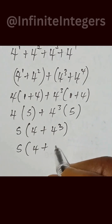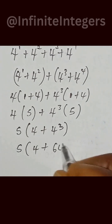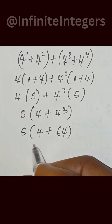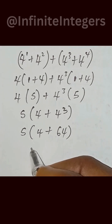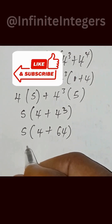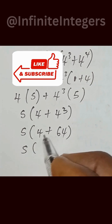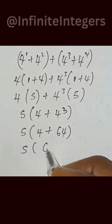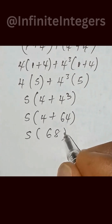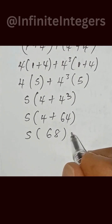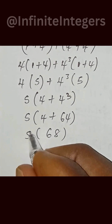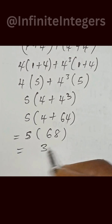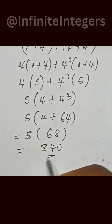We have 5 times bracket 4 plus 4 to the power of 3. Since 4 to the power of 3 equals 64, we get 5 times bracket 4 plus 64, which gives us 5 times 68, equal to 340.